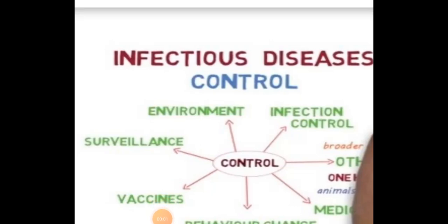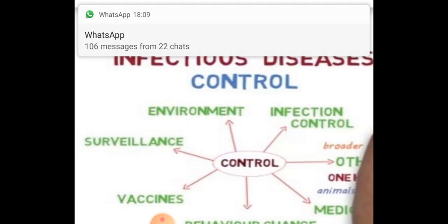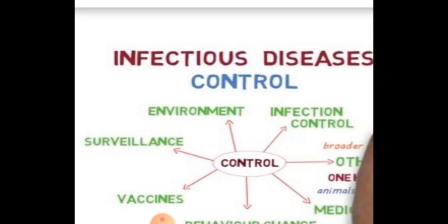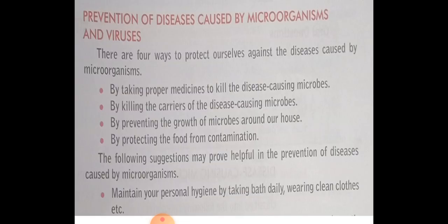Jain student, welcome to biology class. So students, in this lecture we will discuss about the prevention of diseases caused by microorganisms and viruses. Now we will discuss all the types of measures which you should take in order to prevent the disease. There are four major ways to protect ourselves against the diseases caused by microorganisms.